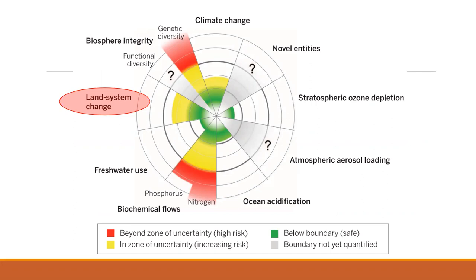We've also talked about anthromes, which is another topic on land system change that you either have seen or will see depending on when you're looking at these slides. From here, we're going to talk about things like freshwater use and biochemical flows as we go through these different planetary boundaries.